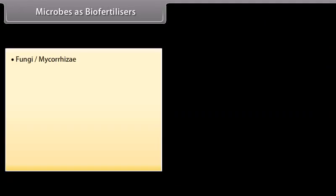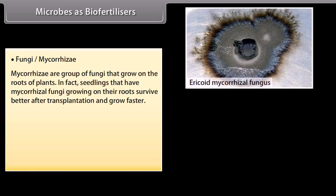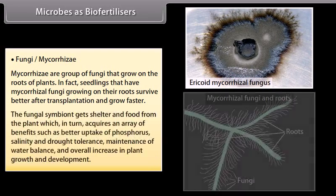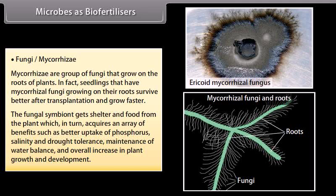Fungi or mycorrhizae. Mycorrhizae are a group of fungi that grow on the roots of plants. Seedlings that have mycorrhizal fungi growing on their roots survive better after transplantation and grow faster. The fungal symbiont gets shelter and food from the plant, which in turn acquires benefits such as better uptake of phosphorus, salinity and drought tolerance, maintenance of water balance, and overall increase in plant growth and development.